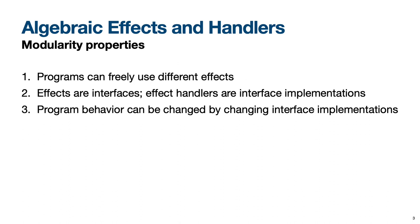So what is it that makes algebraic effects and handlers so attractive? One of the key attraction points is its modularity properties, such as the three summarized here. The first property is that programs can freely and easily use and combine different effects. The second is that effect handlers let us implement each effect independently and seamlessly combine implementations. The third property, which follows from the second, is that by exchanging an effect handler for a different one, we can change the behavior of programs without modifying the program itself.